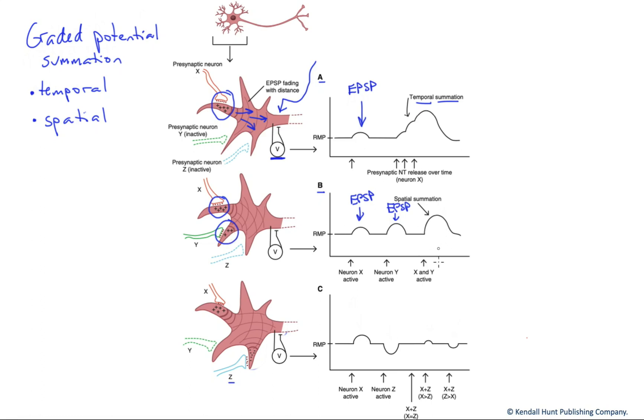But if they happen at the same time, the net effect on the cell is going to be larger. In other words, they are going to add in space, which is known as spatial summation. And our overall effect here would be, with X and Y active, a larger stimulatory response.